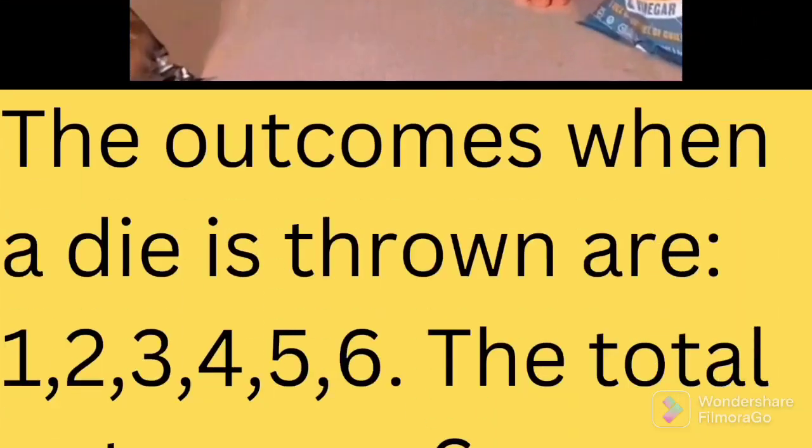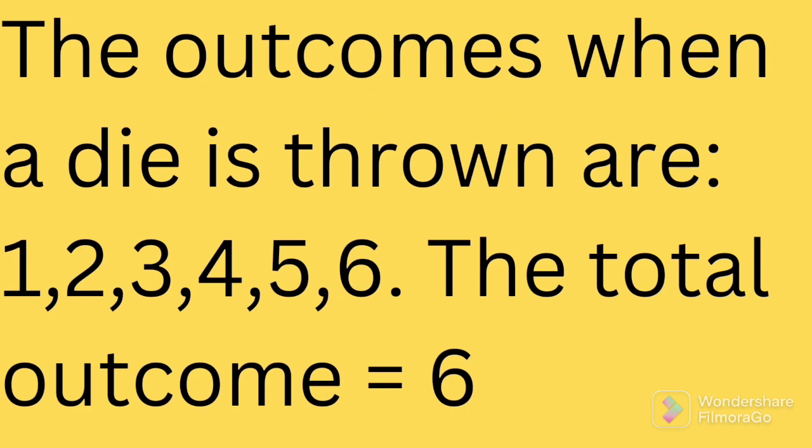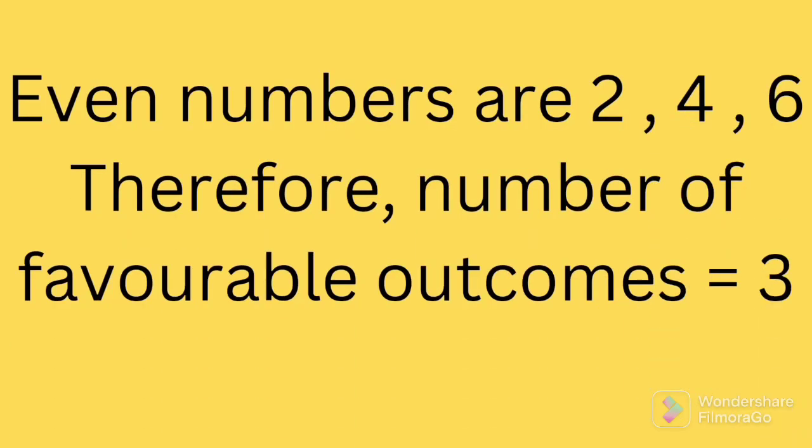When we throw a die in the air, the possible outcomes are 1, 2, 3, 4, 5 or 6. That is the total outcomes is equal to 6. Out of these 6 outcomes there are 3 even numbers, that is 2, 4 and 6. Therefore the total number of favorable outcomes is equal to 3.